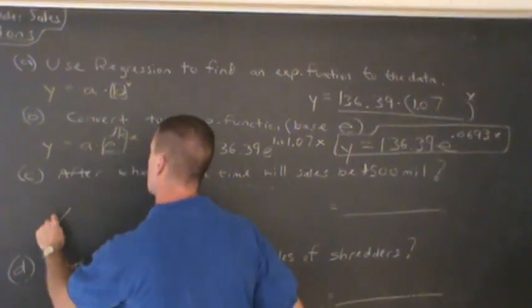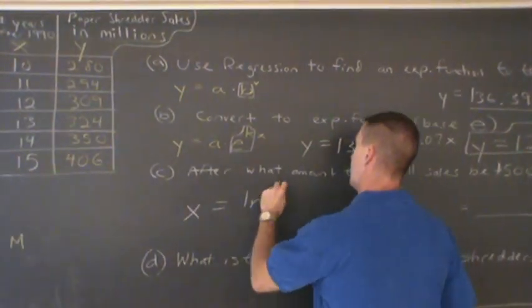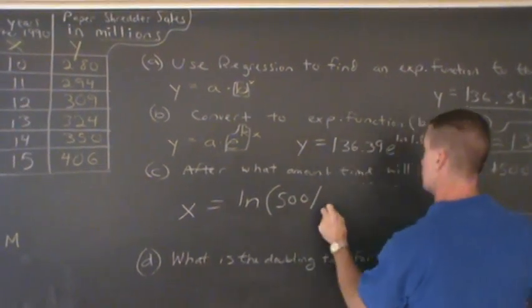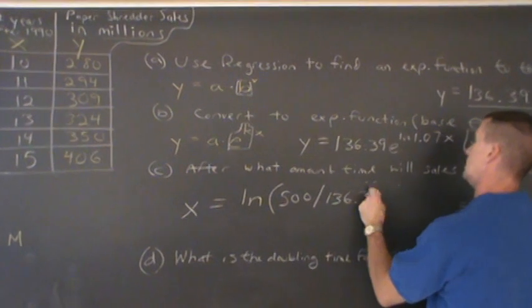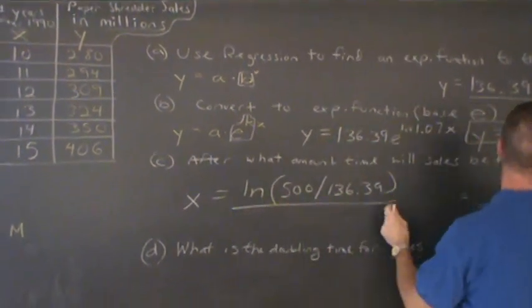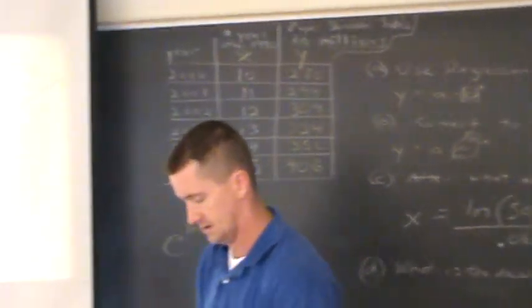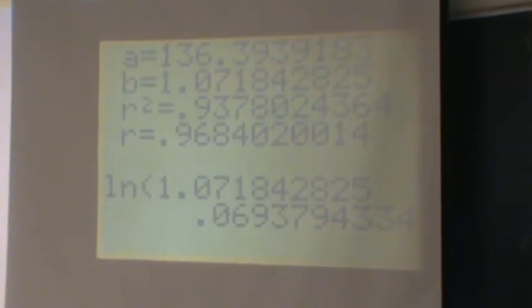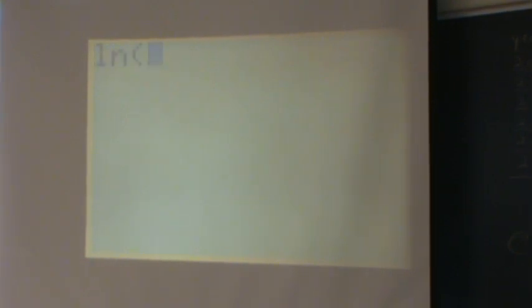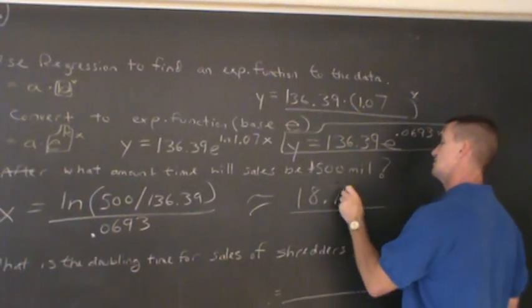So, what you'll find out in the end, once you do that, x will equal the natural log of 500 divided by the 136.39, and all this divided by that rate .0693. Now, let's see what we get. How long will this take? So, I'm gonna hit clear here, get a nice window. What is the natural log of 500 divided by 136.39, close the parentheses, divided by .0693, and I get 18.7 years. And I get 18.7 years, approximately 18.7 years.